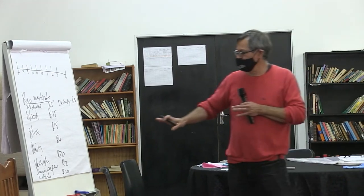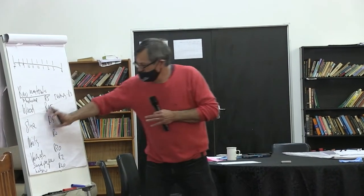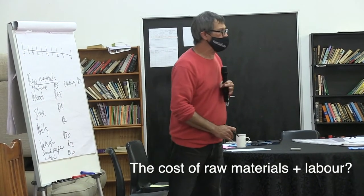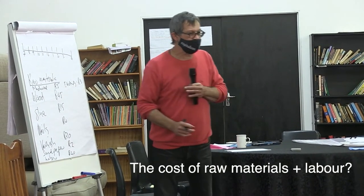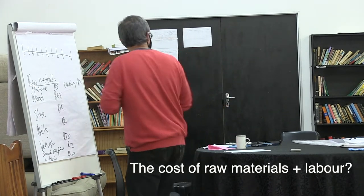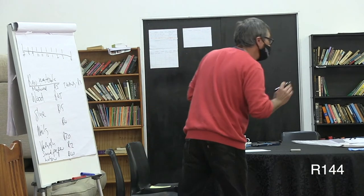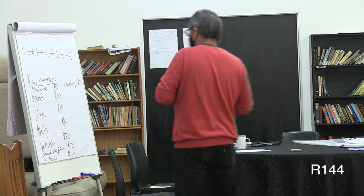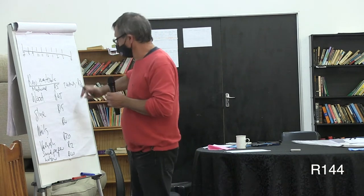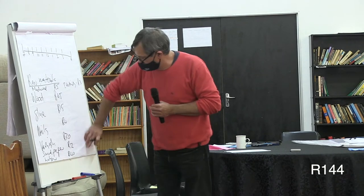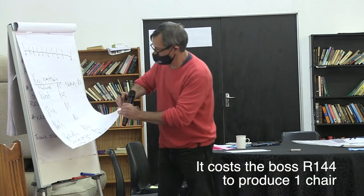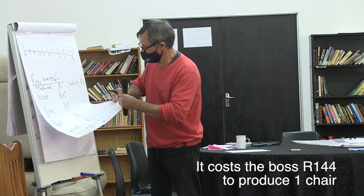How much does all of this come to? The raw materials plus the labour. How much? 144. So all of the cost of one chair for the boss is 144 rand.